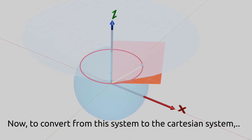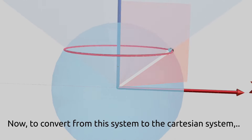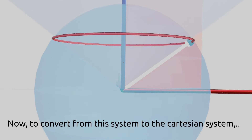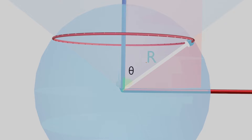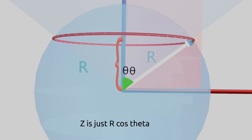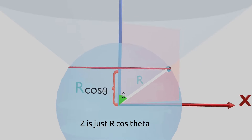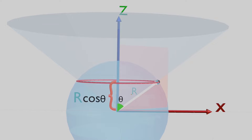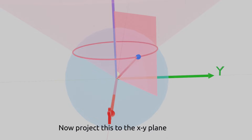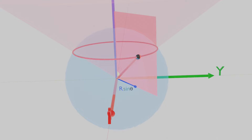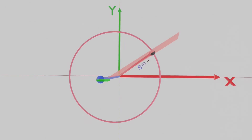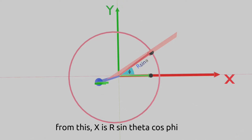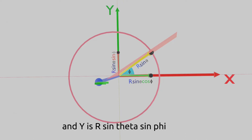Now, to convert from this system to the Cartesian system: z is just r cos theta. Project this to the xy plane — this is r sin theta. From this, x is r sin theta cos phi, and y is r sin theta sin phi.